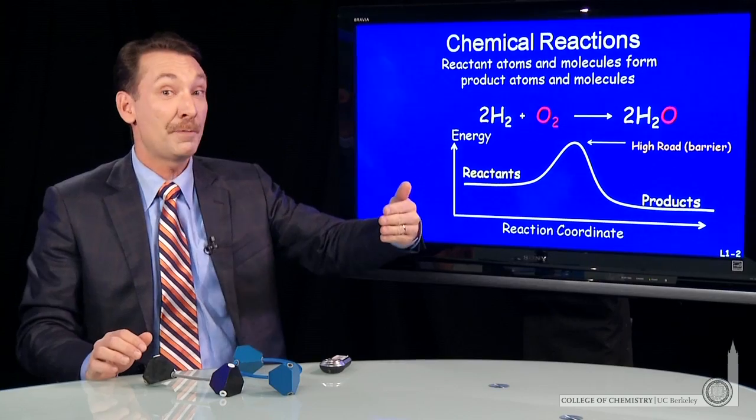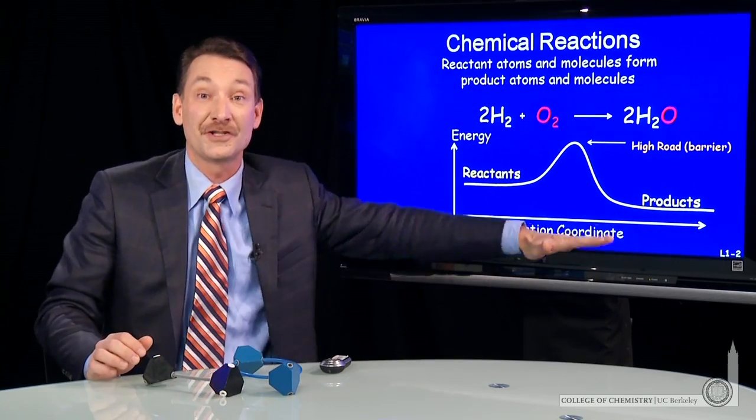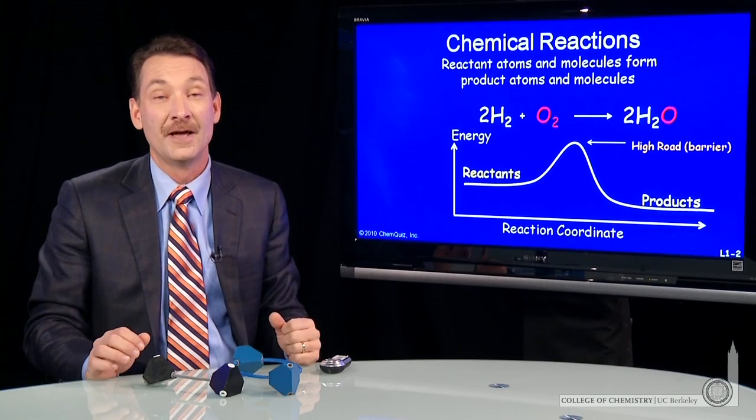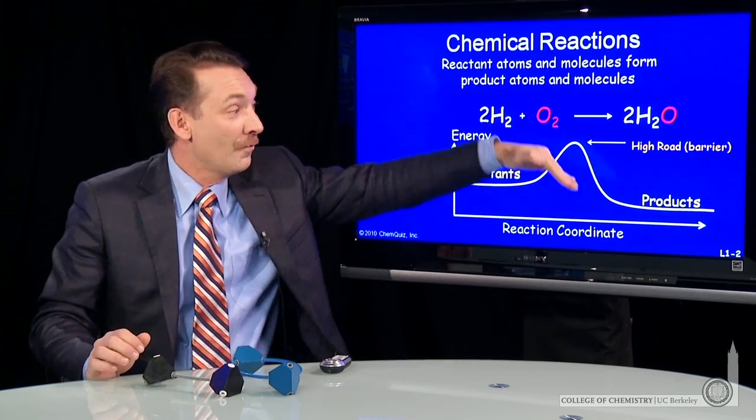So I can get reactants to have enough energy that some of them will react and go over this hill. And then it can become cooperative. They'll release some energy, they'll excite others in the mixture, and they'll all start to fall over that hill. So adding energy allows me to get over this hill.